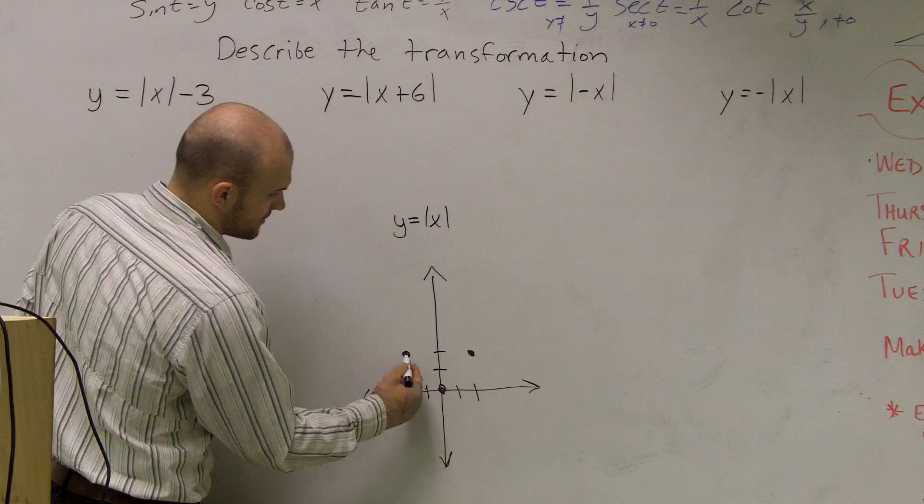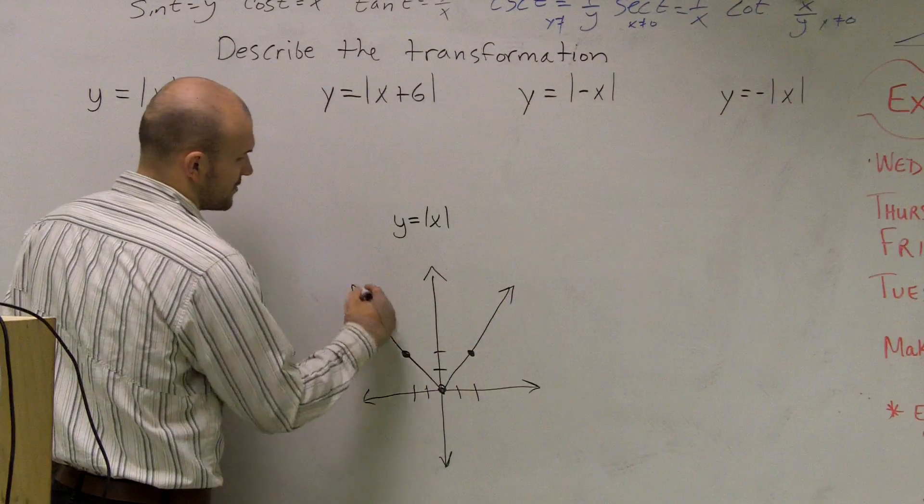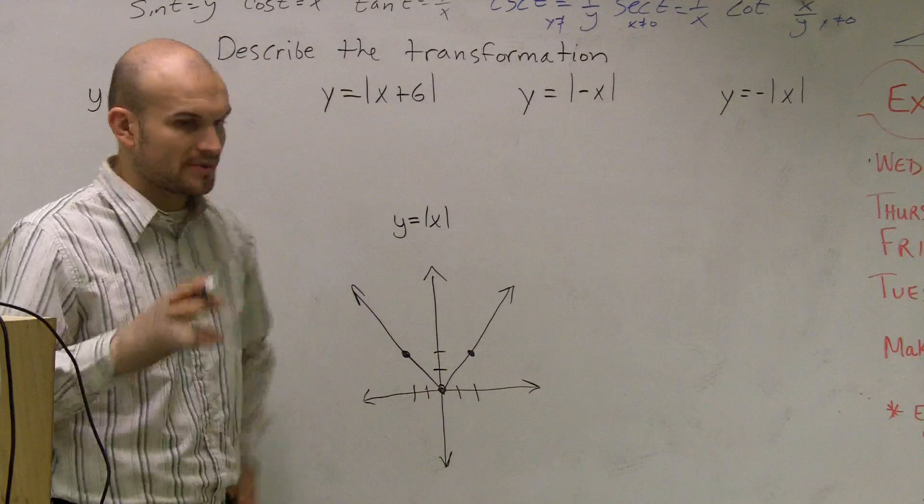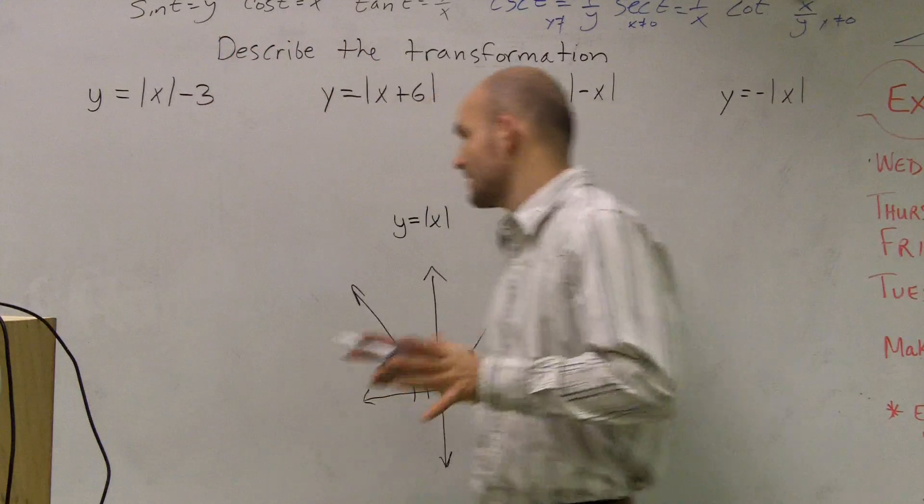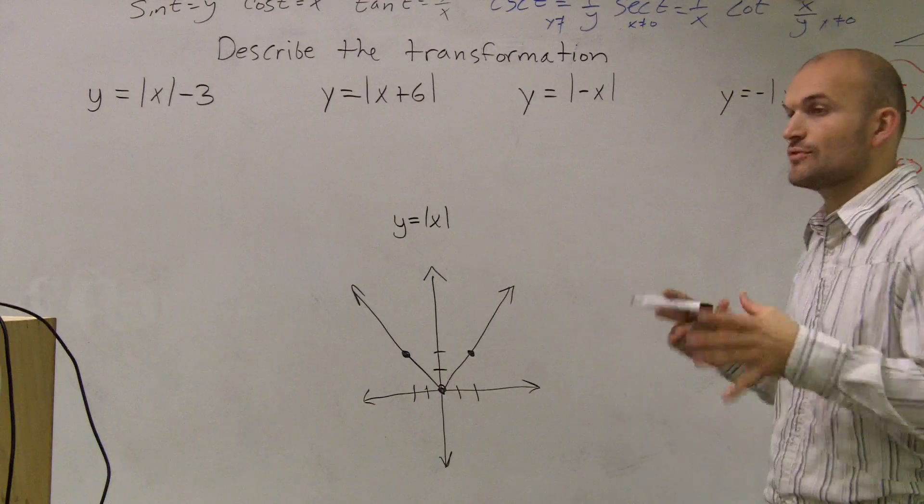So therefore, this is what we call the absolute value graph. And it's reflective about your y-axis, as you notice. Now, there's a couple things that come from this formula that are going to help us be able to determine what our transformations are. The next thing we're going to look at is our transformations.